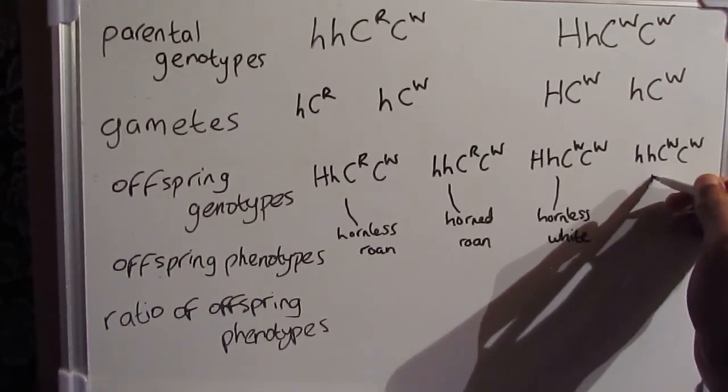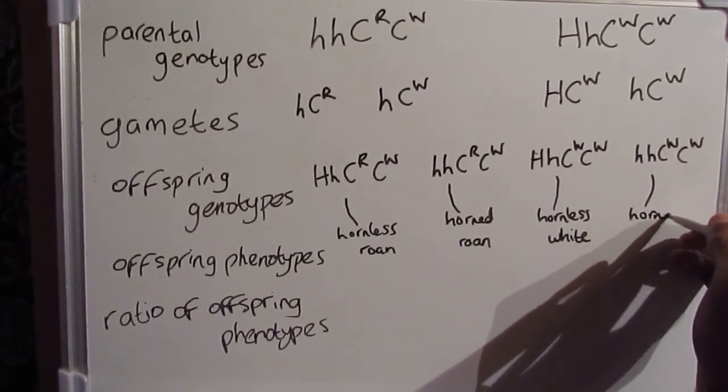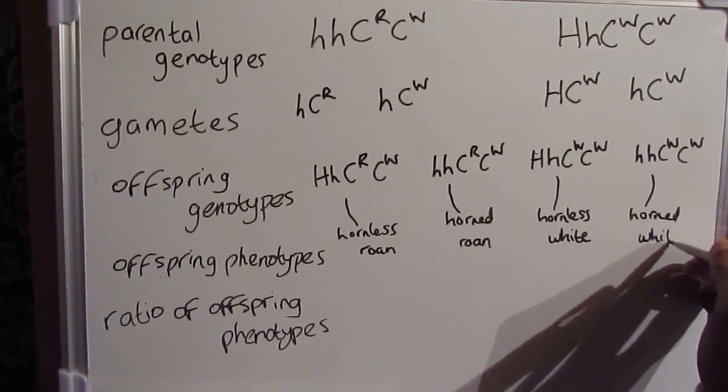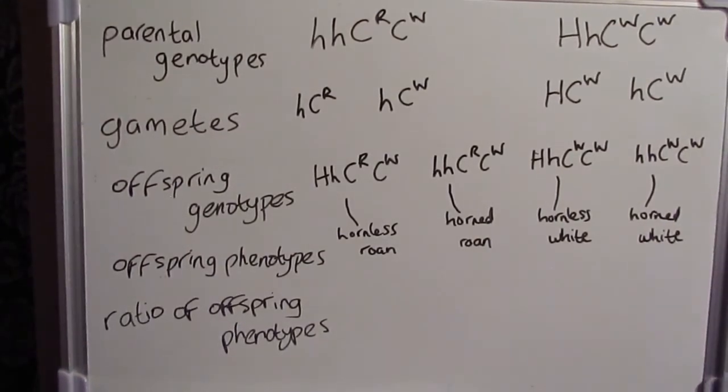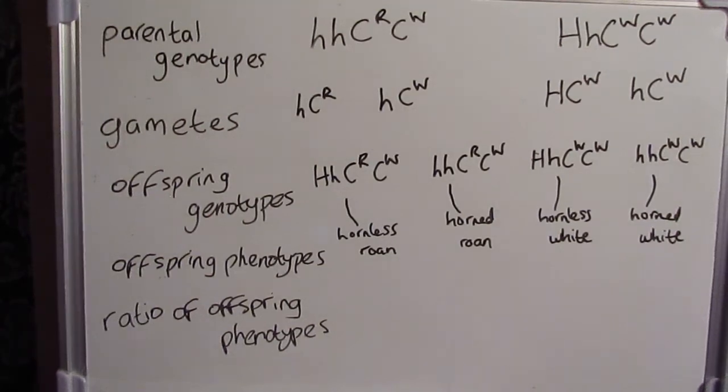Whereas for our fourth and final one, it should be horned white. So those are our four offspring phenotypes now. So by looking at the phenotypes that we have here, we can see that we've got four different genotypes, four different phenotypes. So the ratio of offspring phenotypes should be one to one to one to one.